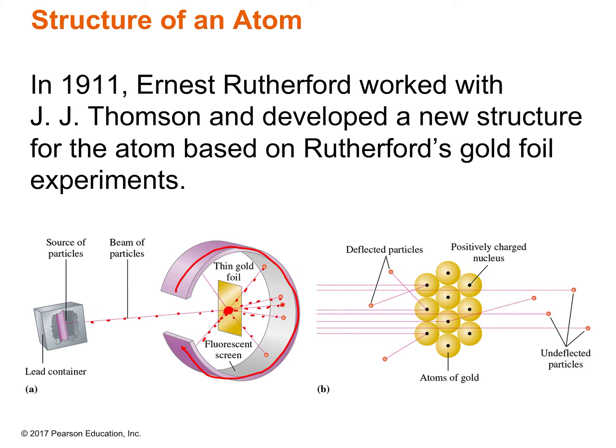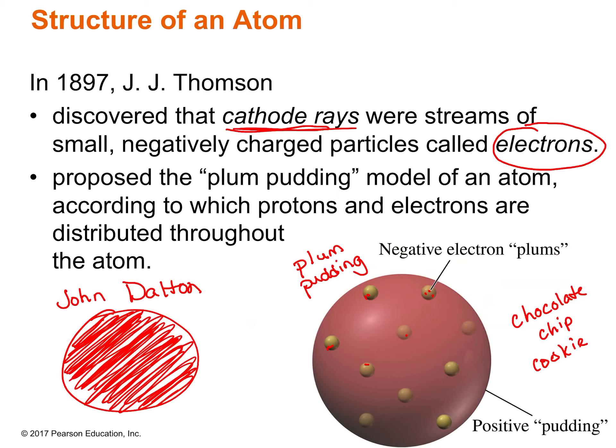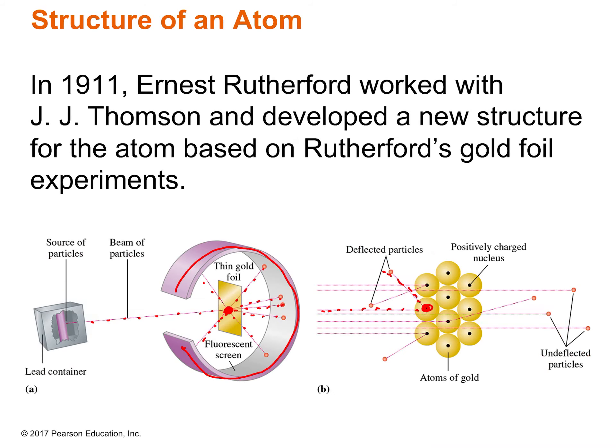There must be something in there — these particles must be hitting something that's causing them to bounce back. Based on J.J. Thompson's model, there's nothing in there that should be causing a bounce. Even if it hit the electrons, the electrons are really small, and since we're shooting positively charged particles and electrons are negatively charged — positives and negatives attract — it should stick, not bounce. So the plum pudding model must not be true, because there's nothing in there for it to bounce off of.